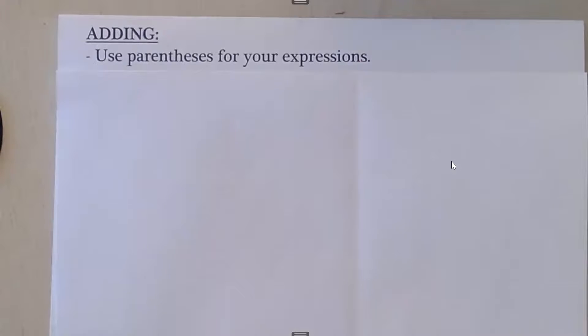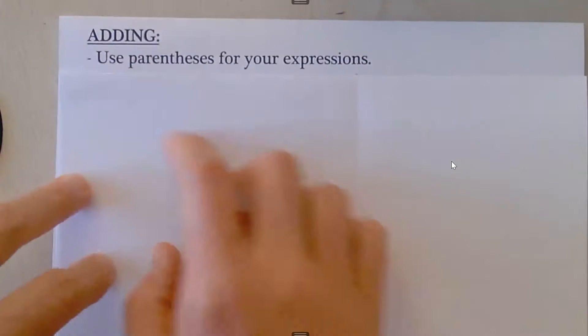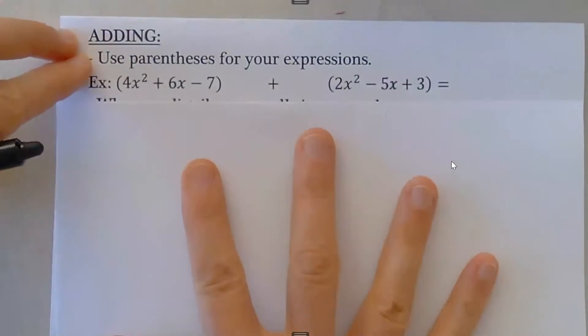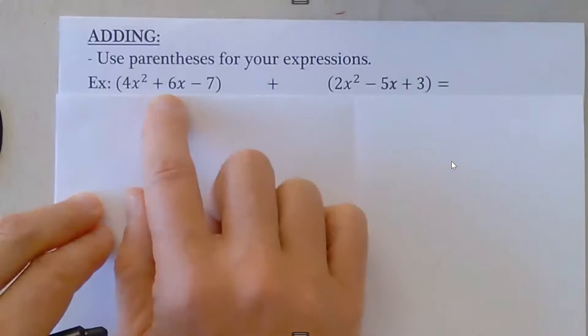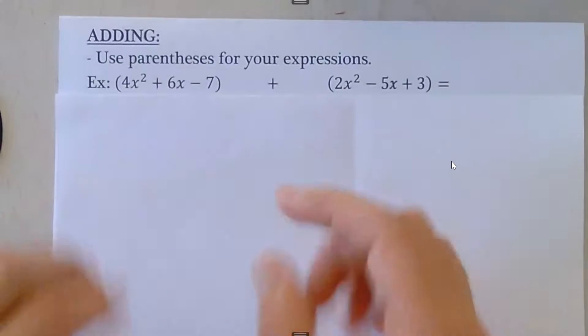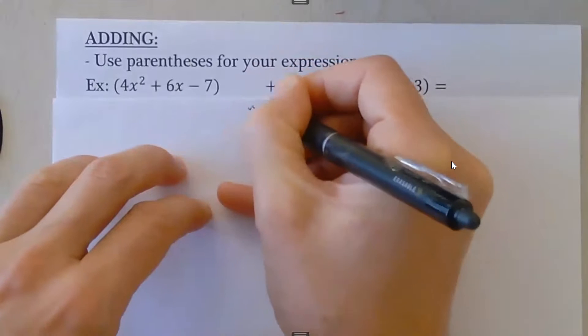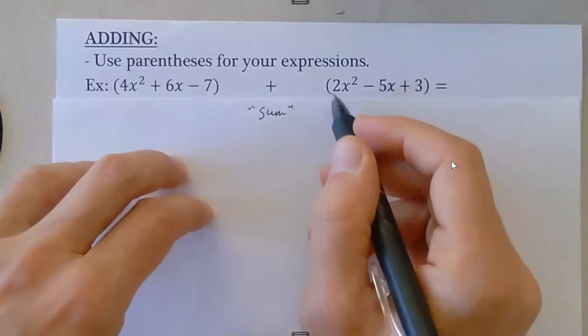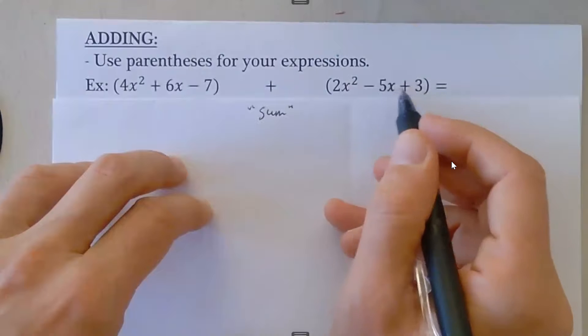When we add polynomials, again please use parentheses for your two expressions. Here we have our example: 4x² + 6x - 7 plus, so this is like the sum of 2x² - 5x + 3.